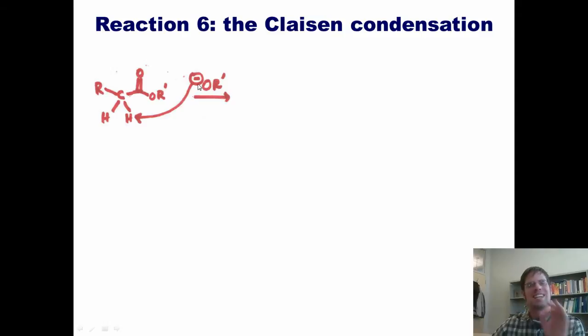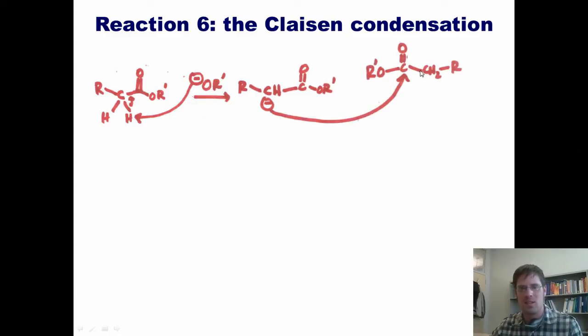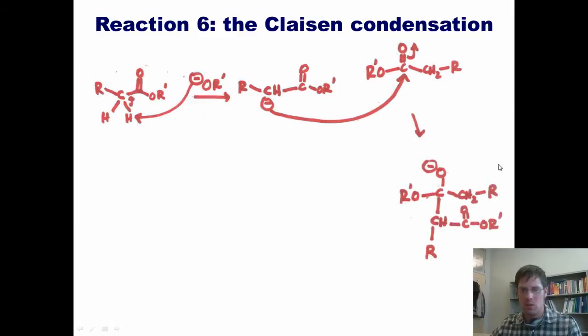My alkoxide base, once again complementary to the ester starting material, comes in, strips an alpha proton to give me this enolate. That enolate, stirring in solution, then looks around and sees another molecule of starting material. The negatively charged carbon adds into the carbonyl, thrusting the electrons onto the oxygen to give this intermediate.